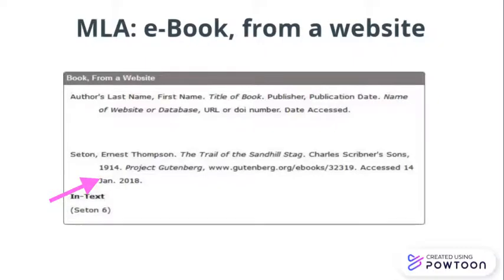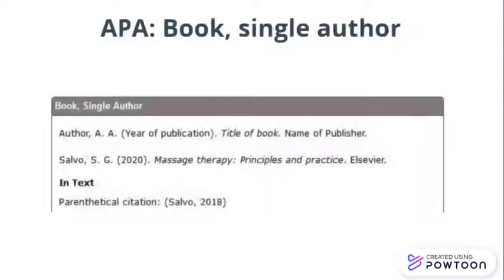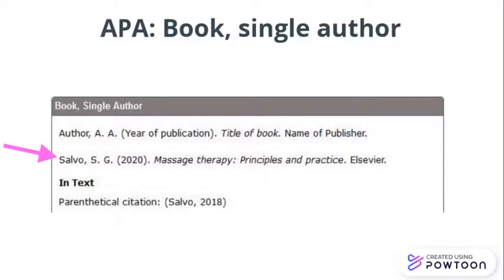Let's compare this to another widely used citation style, APA. Starting with the 2020 7th edition, APA's in-text citations look quite similar to MLA's — only the comma is different. However, in the final reference list, APA's punctuation and formatting is different from MLA's.